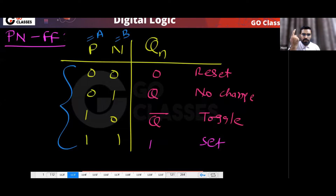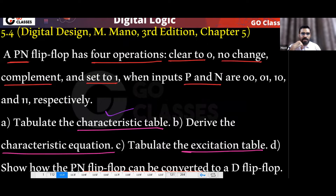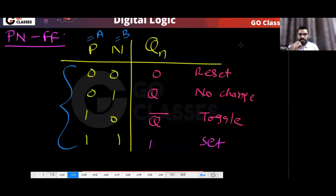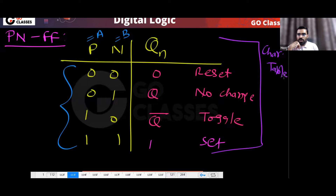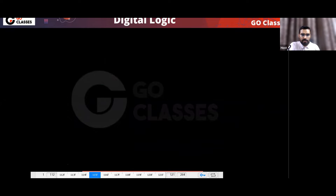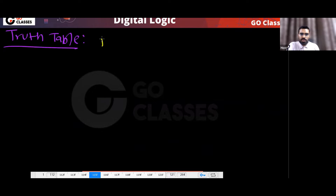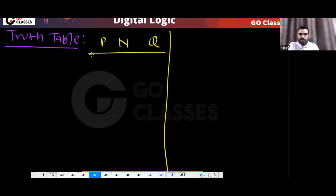You can solve this question. The first thing the question asks is the characteristic table — and we've already got that from the given information. Now let's find out the truth table of the PN flip-flop to derive the characteristic equation. The truth table will show next-state output as a function of P, N, and current state Q.